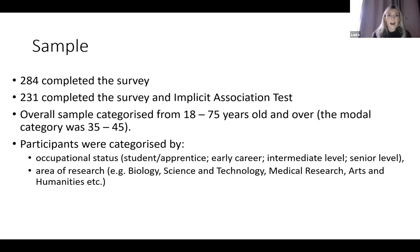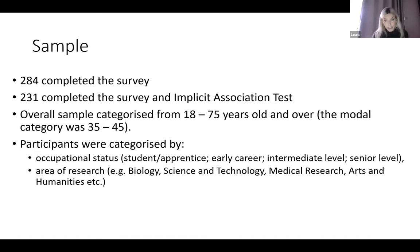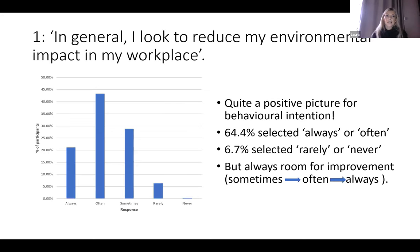In terms of sample size, we received 284 people who completed the survey, and of that 284, there were 231 who completed both the survey and the Implicit Association Test. Thank you to Poppy for helping with the dissemination of that survey and sharing it amongst the community. It's important to note that not all of those 284 completed each question — some weren't applicable and they moved on to the next, so there are different Ns between different questions. We asked people for their age — categories were between 18 and 75 and over, with the modal category being 35 to 45 — and also their occupation status, area of research, and how they interact with the DRI.